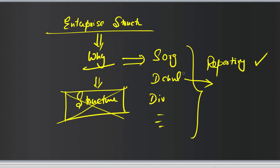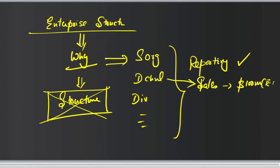What I mean by reporting: how much sales do we do in a particular distribution channel? For example, $100 million in retail and $150 million in franchises. That gives somebody up in the value chain — say the CEO — a picture of which distribution channel to concentrate on, which needs more effort, which gives more leverage, and so on.